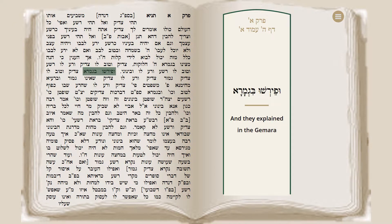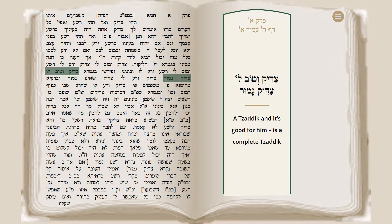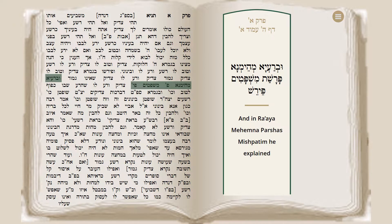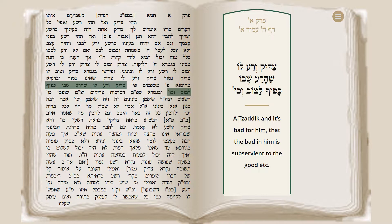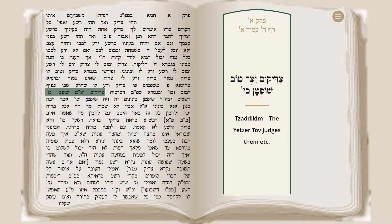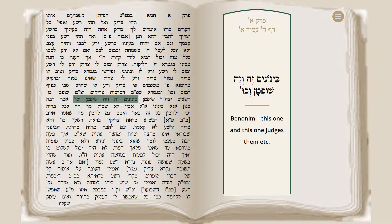The Gemara explains: Tzaddik v'tov lo — this is a Tzaddik Gamur, a complete Tzaddik. Tzaddik v'ra lo — this is a Tzaddik she'eino Gamur, a Tzaddik that is not complete. Tzaddik v'ra lo means that the bad in him is subservient to the good. And in the Gemara at the end of Perek Tisha B'Brachos, it's explained: Tzaddikim — the Yetzer Tov rules them; Rashaim — the Yetzer Hara rules them; Beninim — both this one and this one rule them, meaning both the Yetzer Tov and the Yetzer Hara.